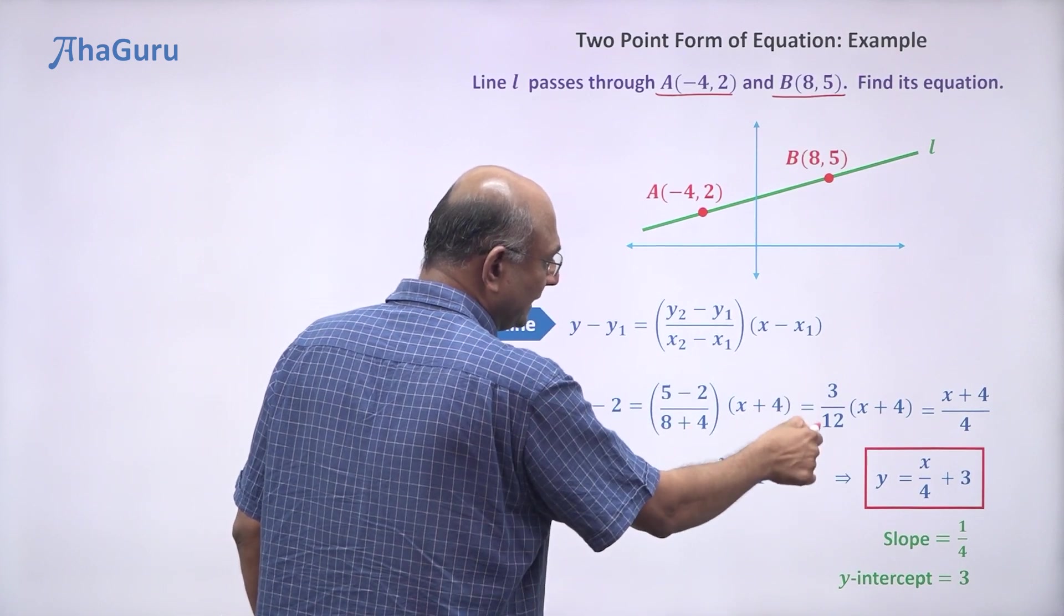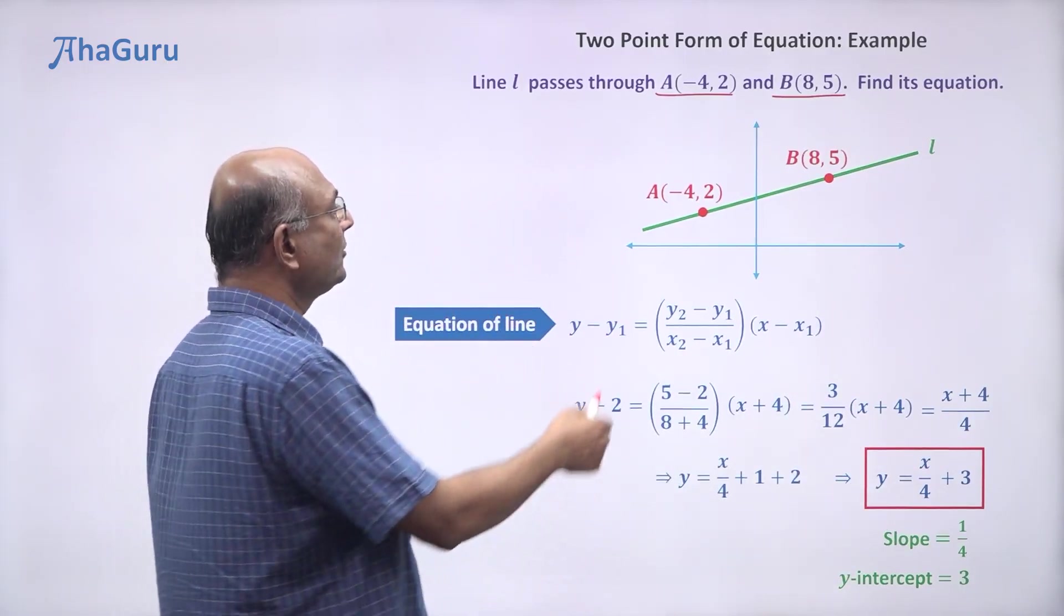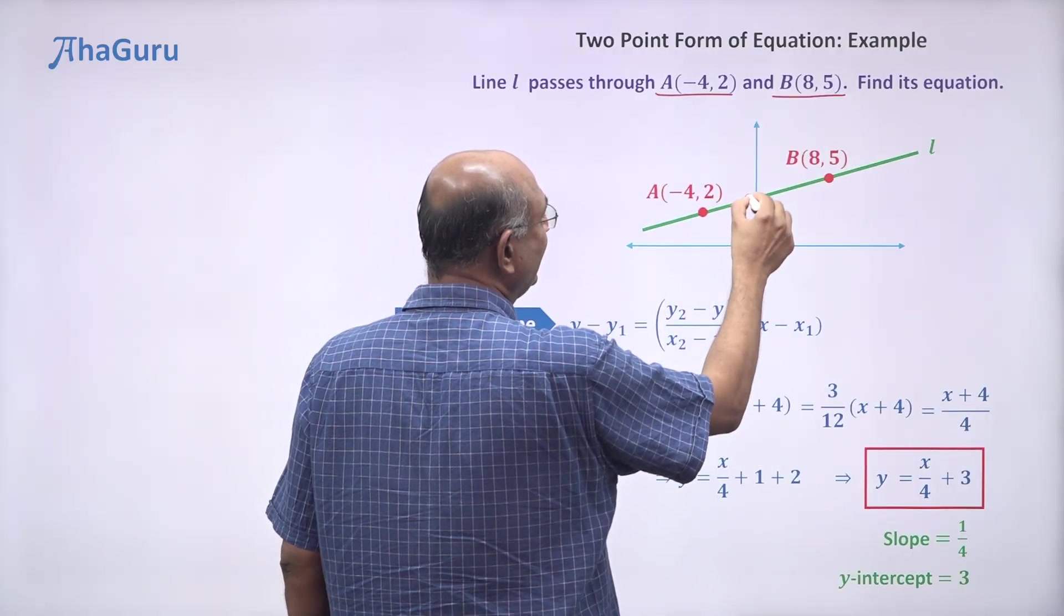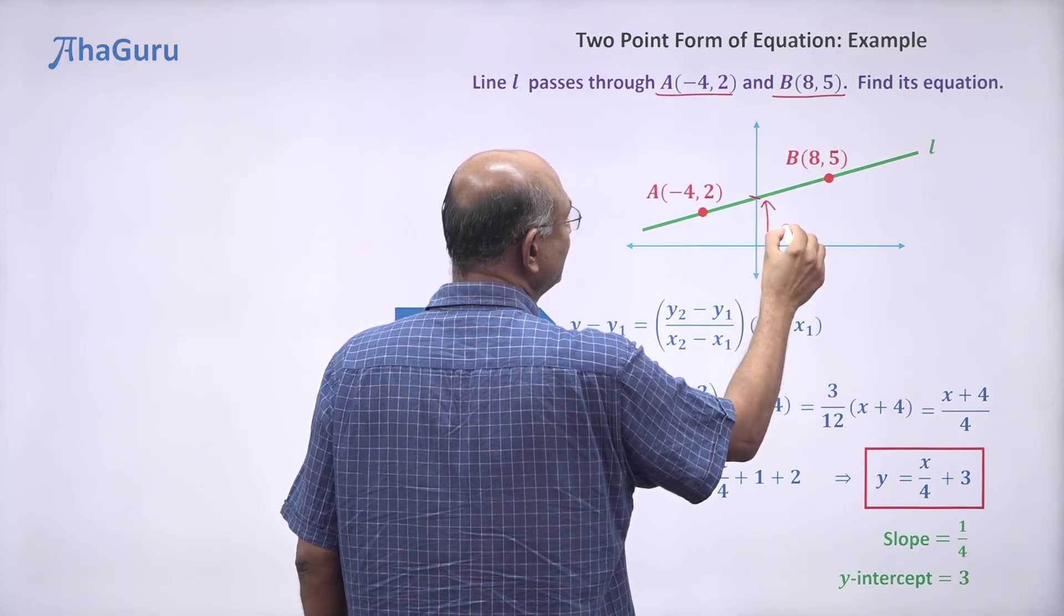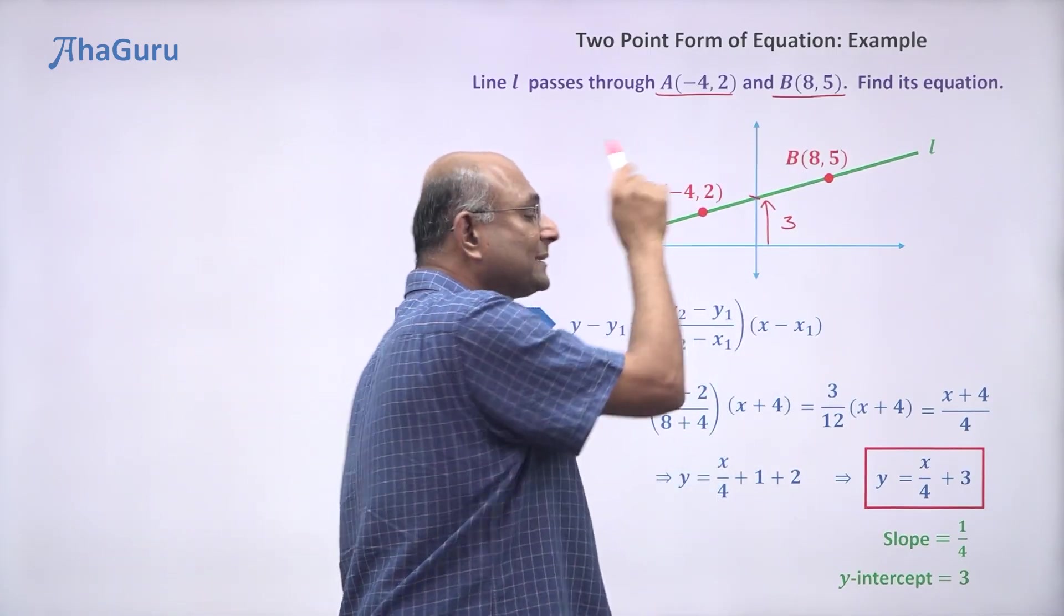In fact, slope is 1/4. You can see this is the slope, this is 3/12. 3/12 is 1/4, so slope is 1/4. You can directly see. You could have of course calculated it here itself. Y-intercept is 3, that tells you that this point will be (0, 3).